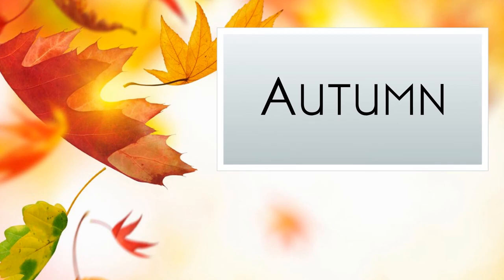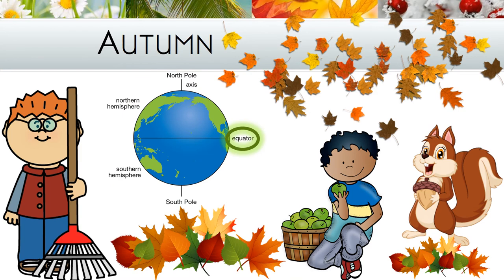The next season we'll be looking at is autumn. In some countries they call this season fall. This is one of the four seasons of the year, and it is the time of year that transitions summer into winter. Along with the tree leaves changing colour, the temperature grows colder, plants stop making food, animals prepare for the long months ahead, and the daylight starts growing shorter.